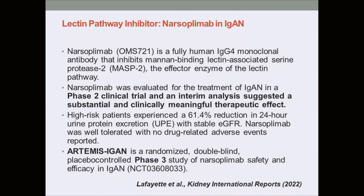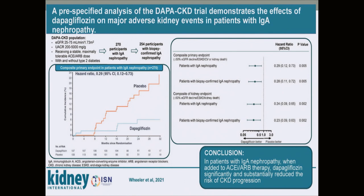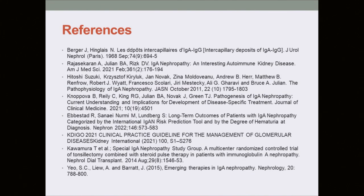The lectin pathway inhibitor narsoplimab showed promising effects in phase 2 trial and its phase 3 trial is currently ongoing. Finally, the DAPA-CKD trial — which assessed dapagliflozin in CKD patients — included a significant number of IgA nephropathy patients who showed significant reduction in proteinuria and improvement in secondary outcomes. Further dedicated trials including the EMPA-KIDNEY trial are ongoing. Thank you.